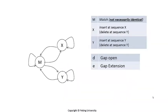M denotes an alignment of two residues, which are not necessarily the same. X means that the residue in sequence X is aligned to a gap, or that there is an insertion in sequence X. Y means that the residue in sequence Y is aligned to a gap, or that there is an insertion in sequence Y.